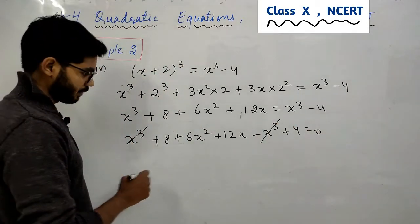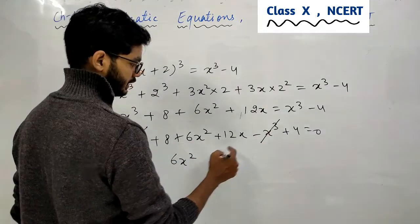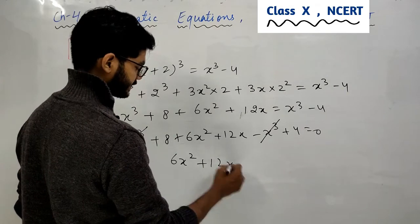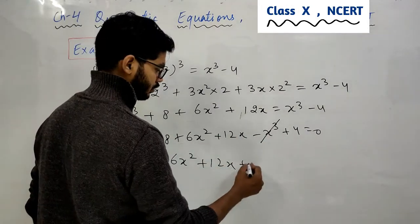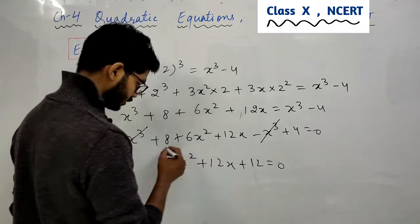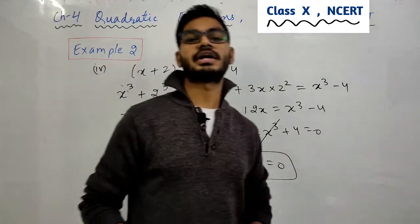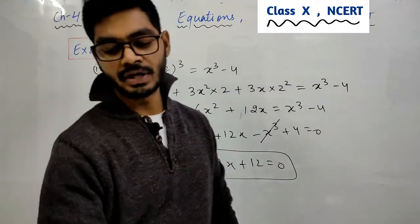इधर लेकर आ जाईए x³ + 4 = 0. X³ से x³ cancel out हो गया. क्या बचेगा? 6x². यहाँ पर कितना है plus 12x और इन दोनों को आप add कर सकते हो which is 12. So 6x² + 12x + 12 = 0.